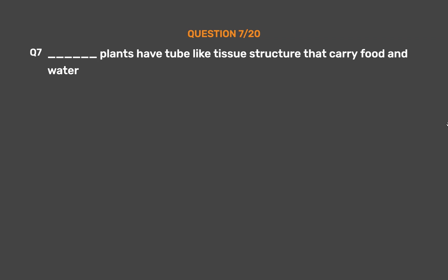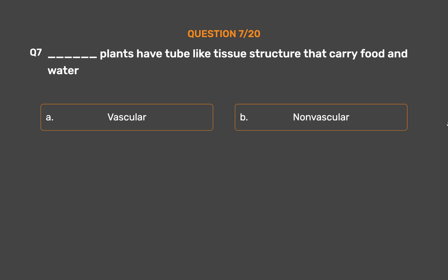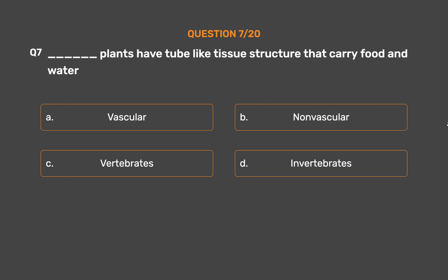Question number 7. Blank plants have tube-like tissue structures that carry food and water. Option A: Vascular. Option B: Non-vascular. Option C: Vertebrates. Option D: Invertebrates.